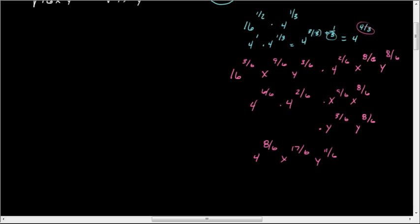So I'm just going to take the 6 out and put it under the root. So this is going to be under the 6th root. 4 to the 8th, x to the 17th, y to the 11th. And now I just pull out groups of 6.